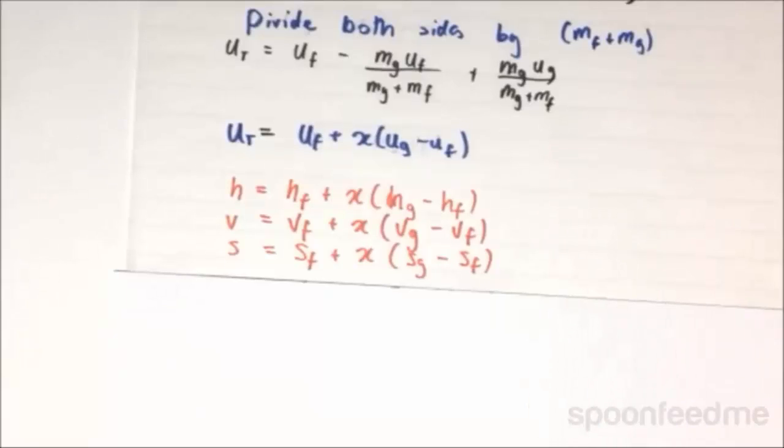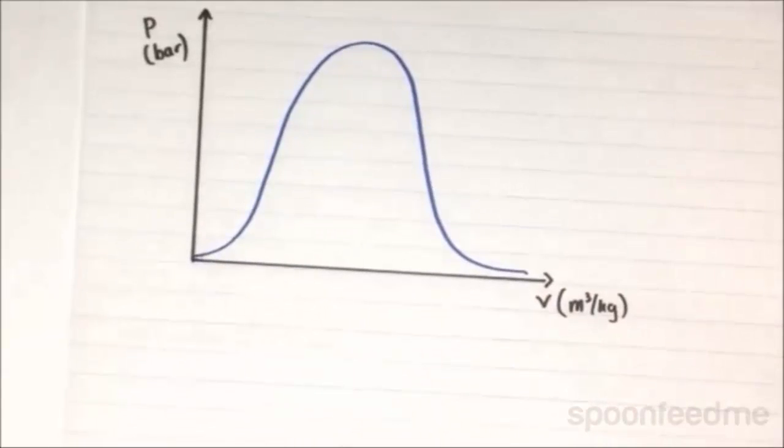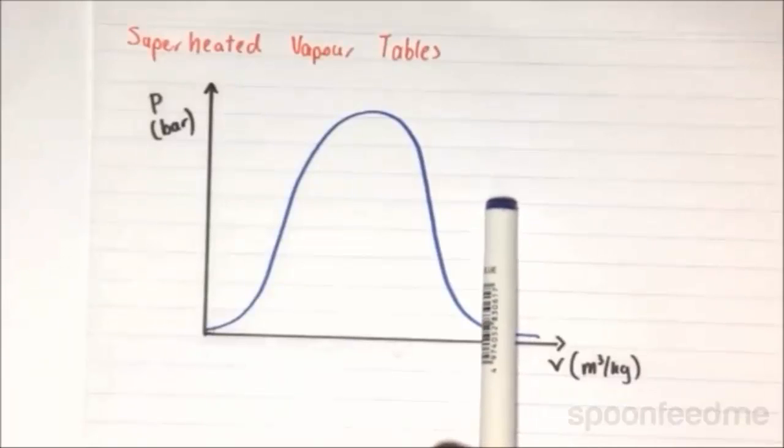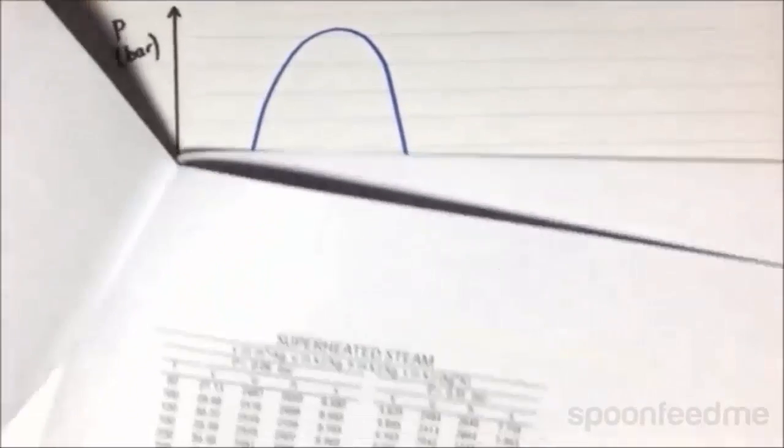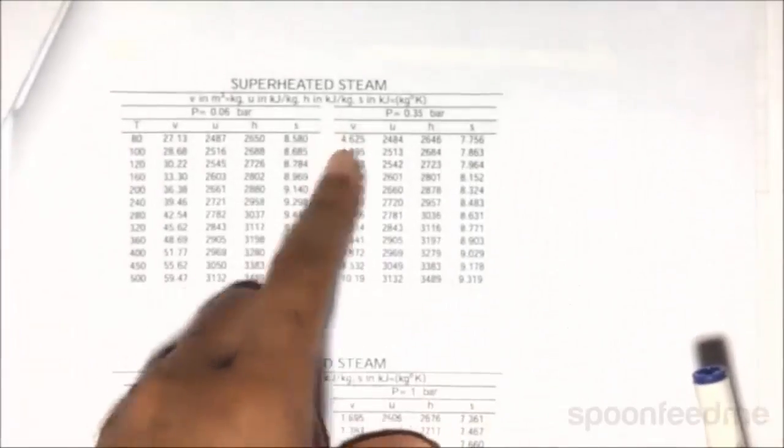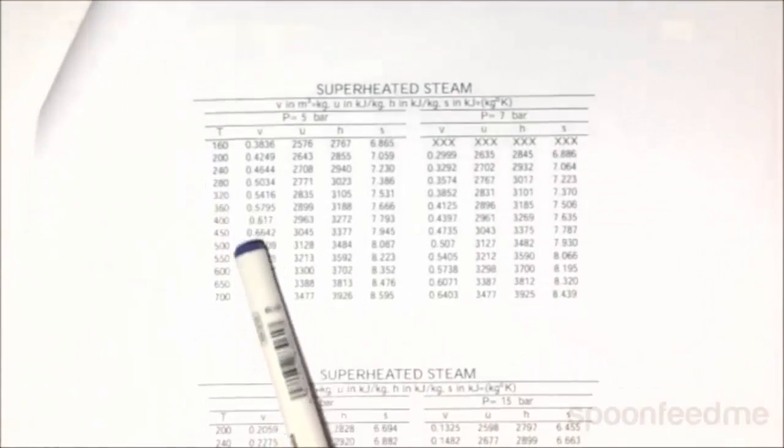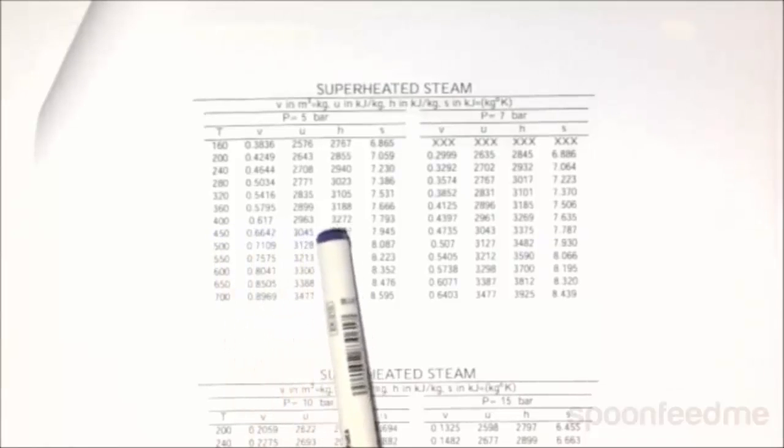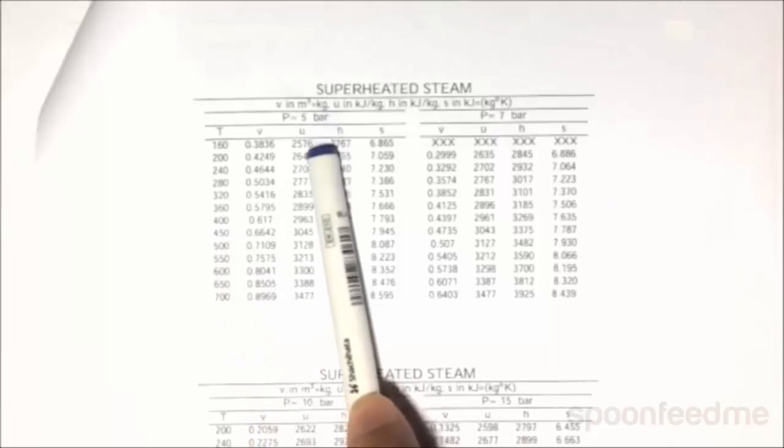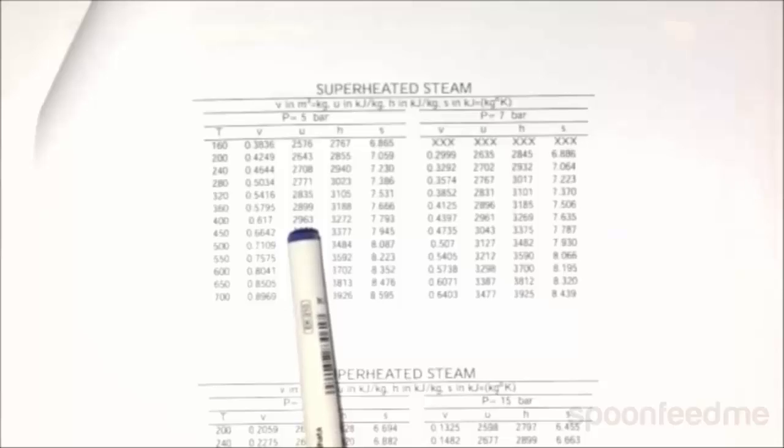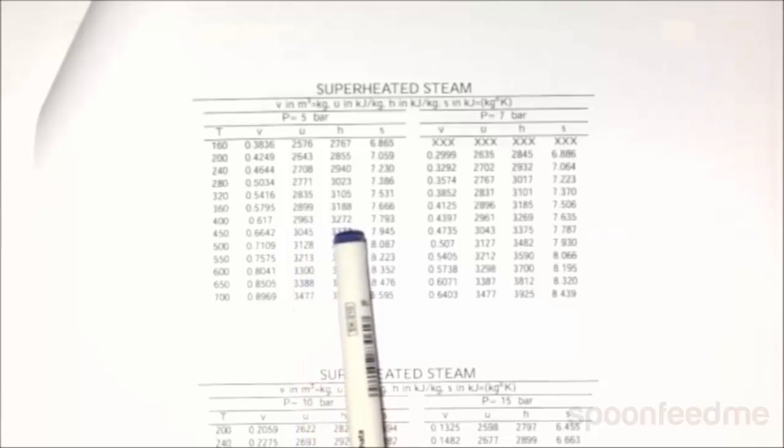Consider, however, if we have a substance that is at a temperature higher than the saturation temperature of the water at the particular pressure. This is when the water is in the superheated steam region. And we require the use of the superheated steam tables. Here we can read off the h, v, and g values right over here, corresponding to the temperature of the liquid at that time. So if we try and take an example here, of 5 bar at 400 degrees Celsius. What it is saying is that at 400 degrees Celsius and at 5 bar, the specific volume will be 0.617 m3 per kg. The internal energy will be 2,963 kJ per kg, and the enthalpy will be 3,272 kJ per kg.